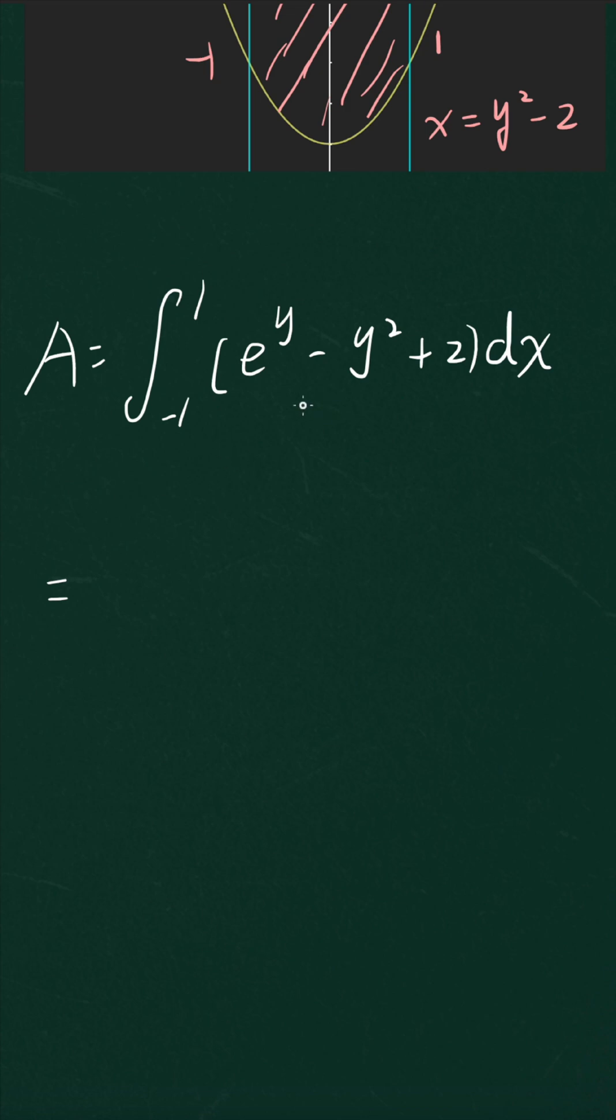It's pretty easy. We're going to find the anti-derivative of each term. The anti-derivative of e^y is e^y. The anti-derivative of -y² is -⅓y³. The anti-derivative of 2 is 2y.